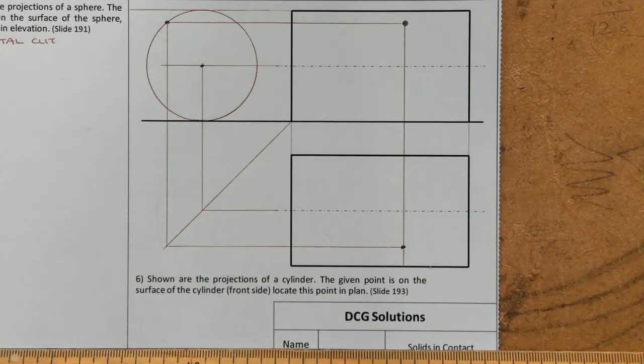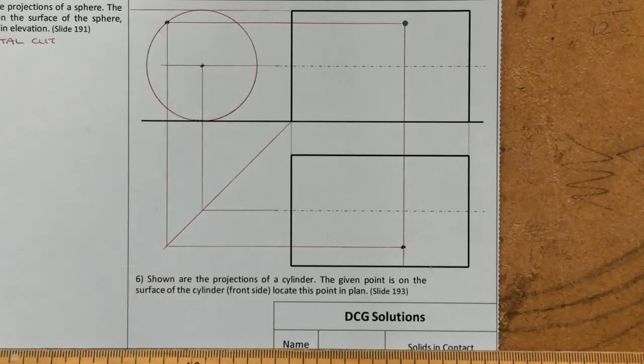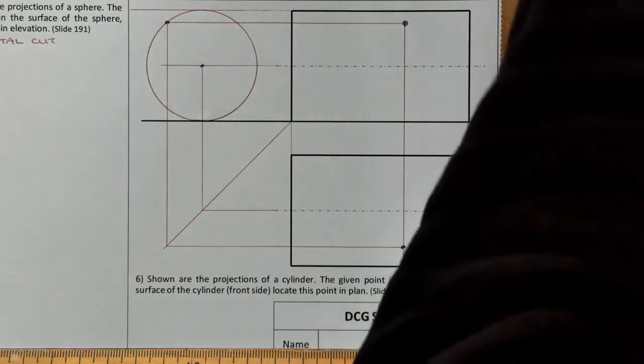That is how you locate a point on a cylinder using an orthographic projection. We have to see the end view of it to be able to get it. At this point you can go off and do that question — hope you found that useful.